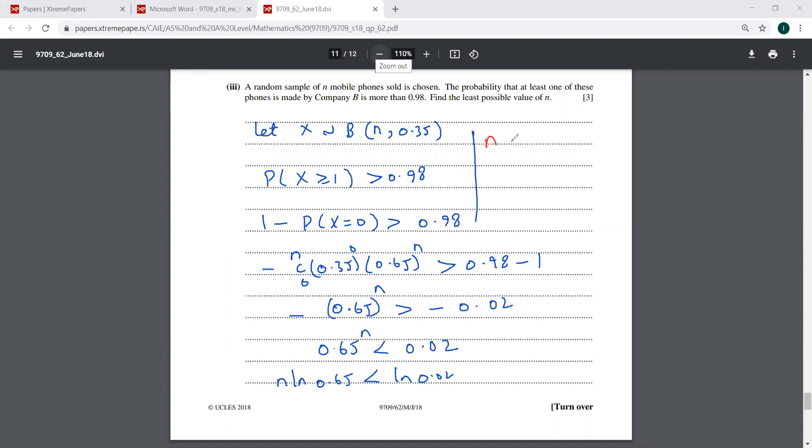This is going to be N. And I'll again be changing this inequality sign because ln 0.02 and ln 0.65, they are both negative. Negative over negative would give you the positive sign. But this sign of inequality has to be changed.